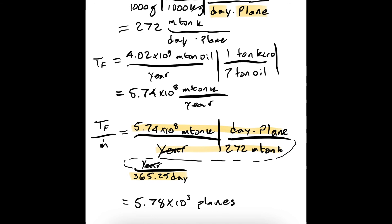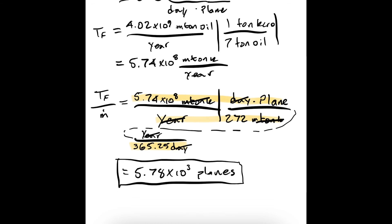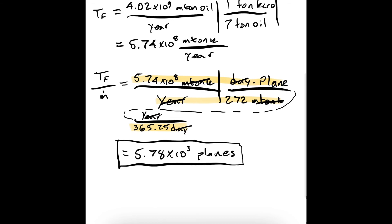You see the years cancel, the days cancel, the metric tons of kerosene cancel, and we're just left with the number of planes. So that is our final answer. It would take about 5,000 to 6,000 planes to use the entire year's worth of kerosene. If you have any corrections you'd like to submit, put them in the comments and I'll add them to the video description. Thanks for your help. Bye.